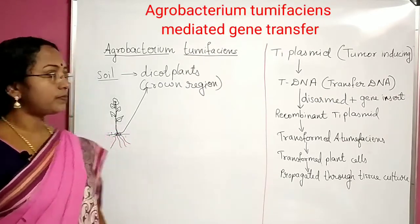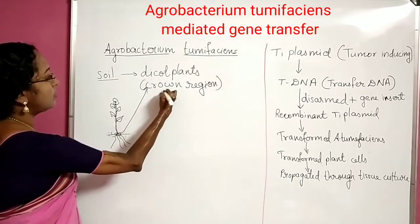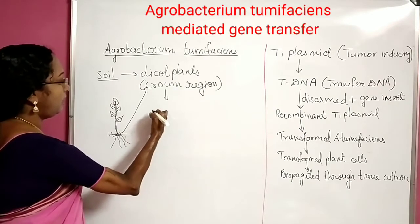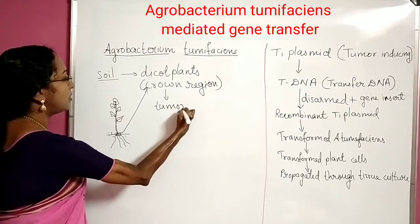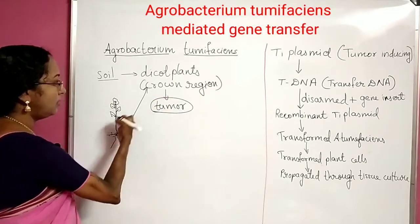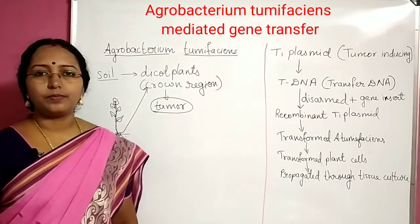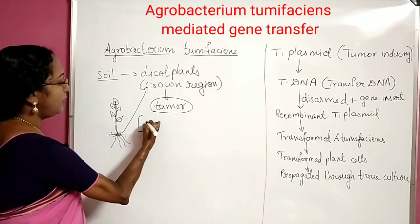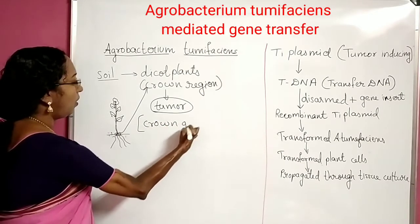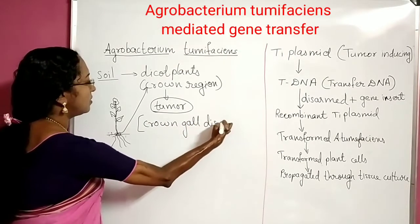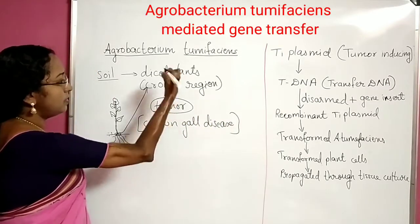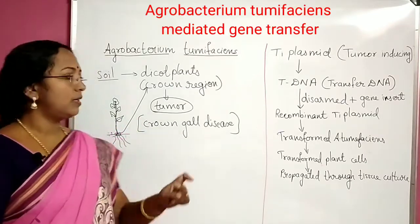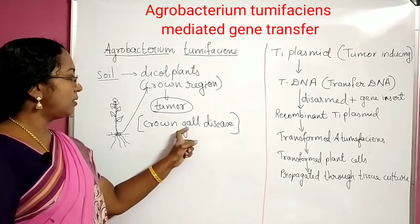In this region it causes the cells to multiply drastically, very quickly, and so it causes a tumor there — a tumor in the crown region of dicot plants. This whole disease is named as crown gall disease. 'Crown' because it is in the crown region, and 'gall' because it is a group of cells, like a ball or bunch of cells, resembling a tumor.